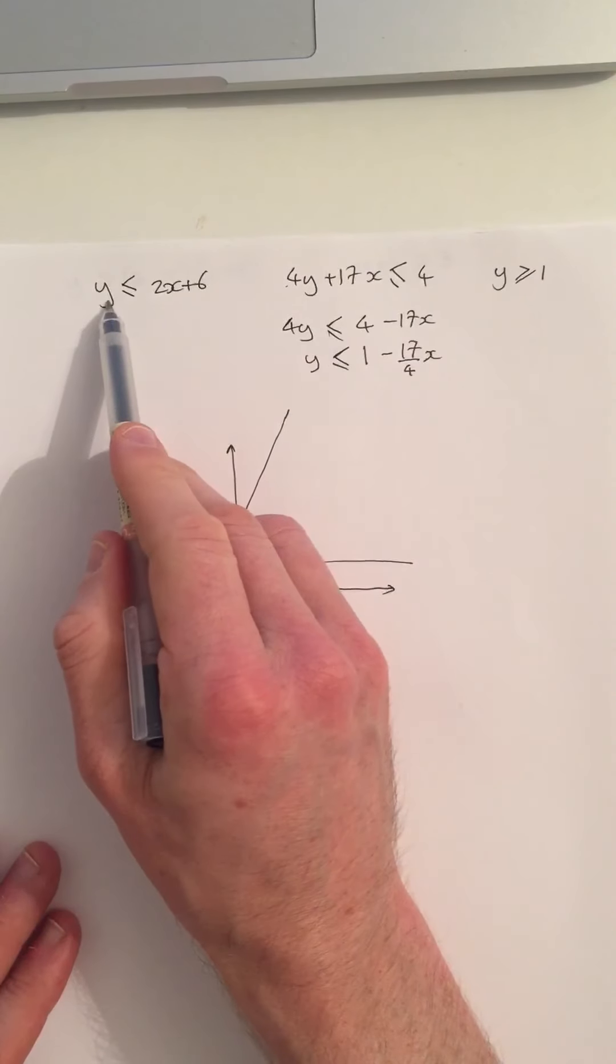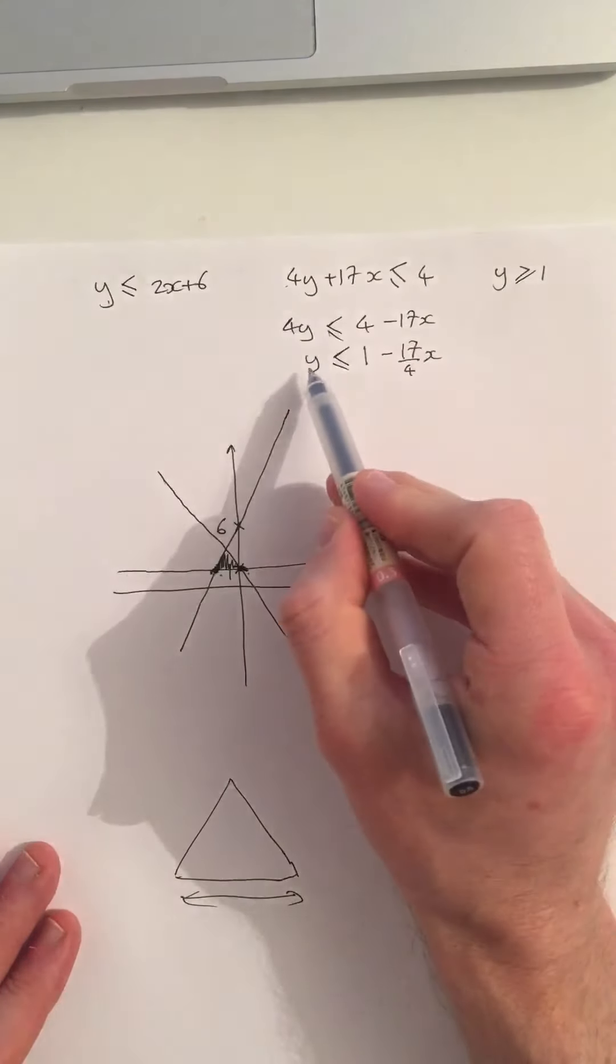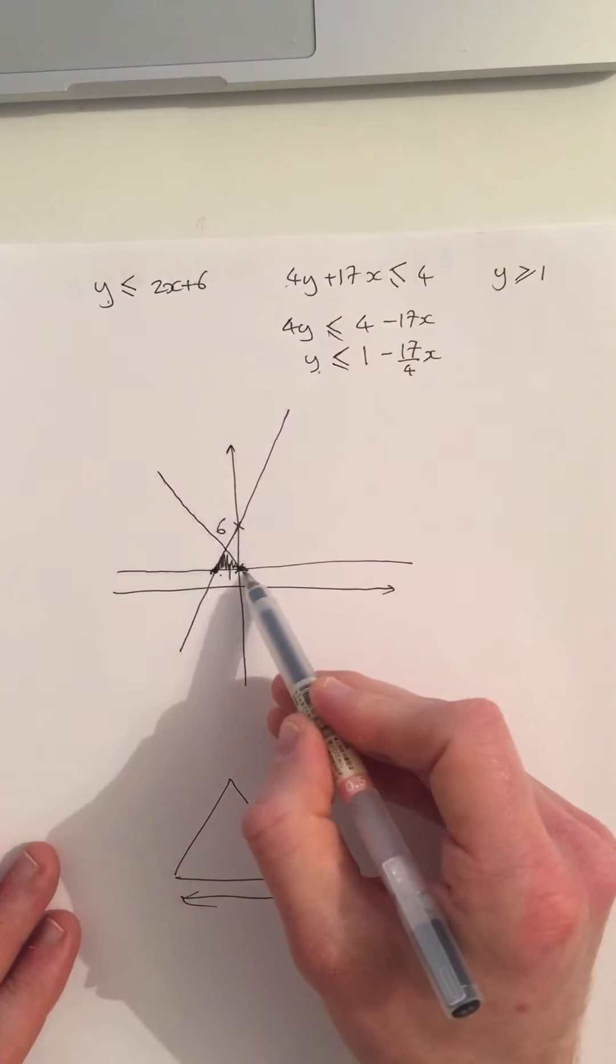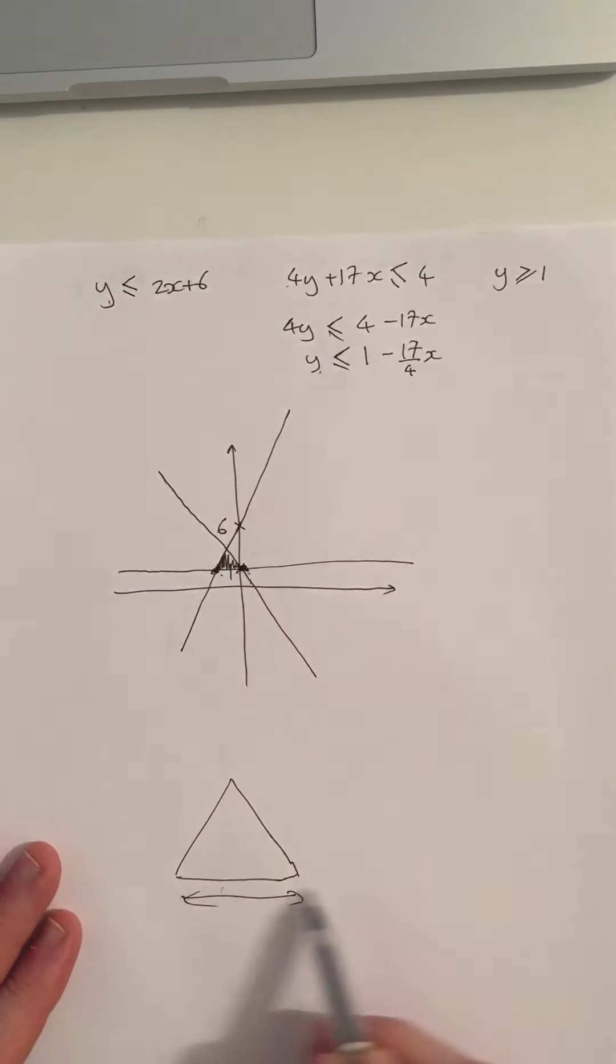So if I put 1 here, I can work out the x coordinate here. If I put 1 here, I can work out the x coordinate there. And then I can work out the base.